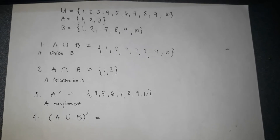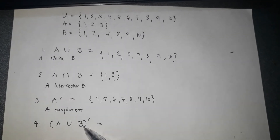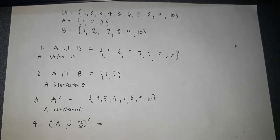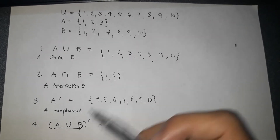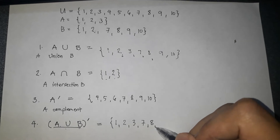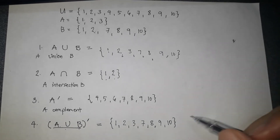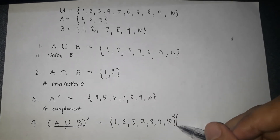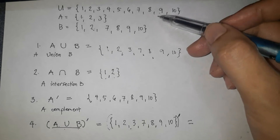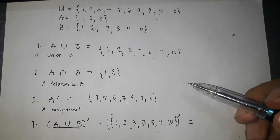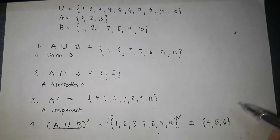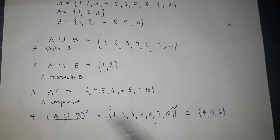Next, level 2: (A union B) complement. If there is a parenthesis, just like in PEMDAS, we solve A union B first, then find the complement. A union B is already answered: {1, 2, 3, 7, 8, 9, 10}. The complement means the elements in U not found in this set. So the answer for (A union B) complement is {4, 5, 6}.